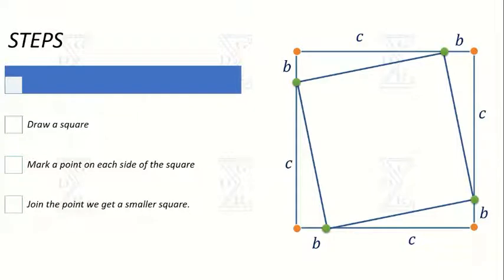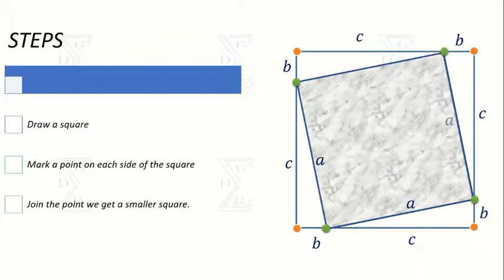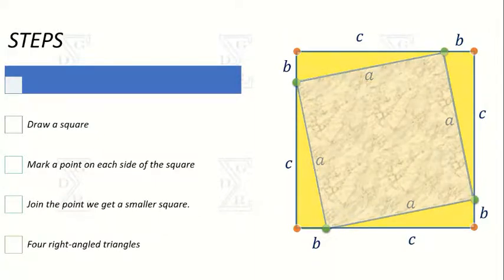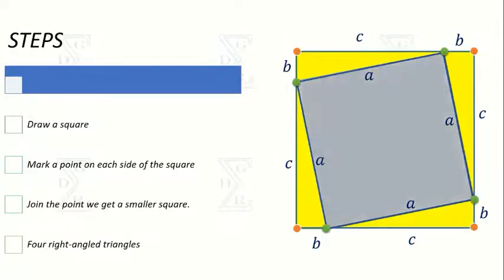Mark the side of the smaller square as a. The remaining part of the original figure has four right-angled triangles. It is clear that in the adjacent figure we have two squares and four right-angled triangles.